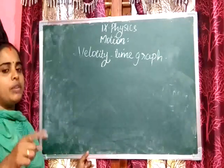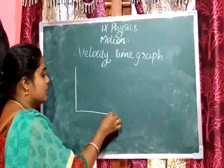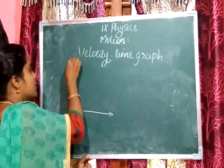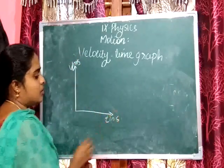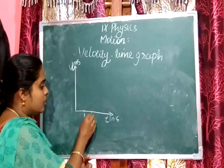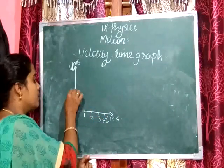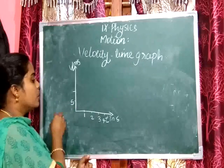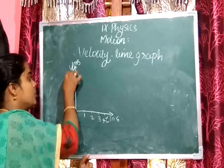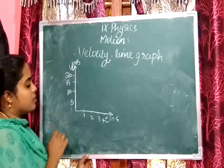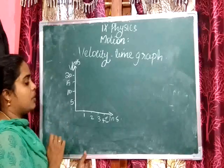For velocity-time graph of uniform speed — if speed is constant, how can we represent it through a graph? We plot it the same way, with velocity in meter per second on the y-axis and time in seconds on the x-axis. The scale on the y-axis is 1 centimeter equals 5 meter, marking 10, 15, and 20 meter per second.